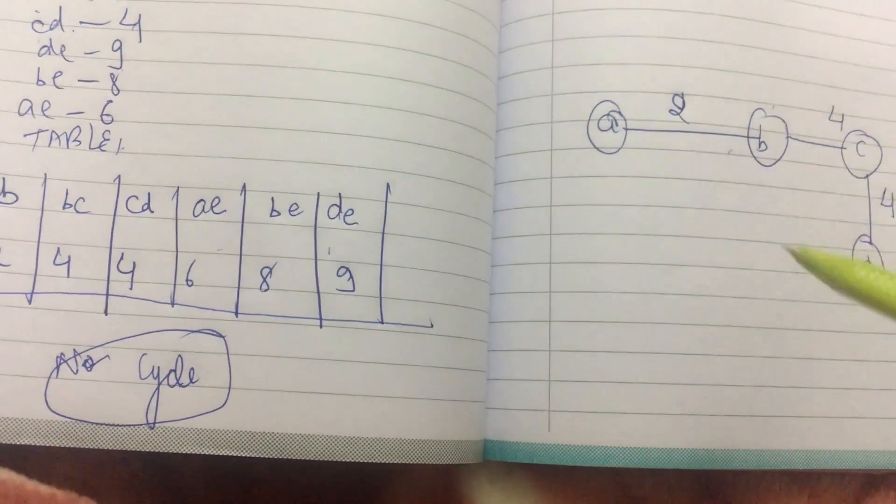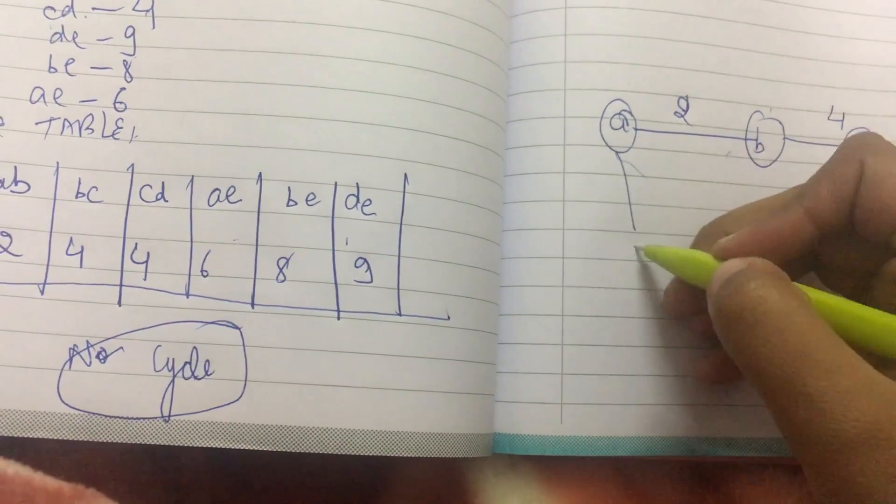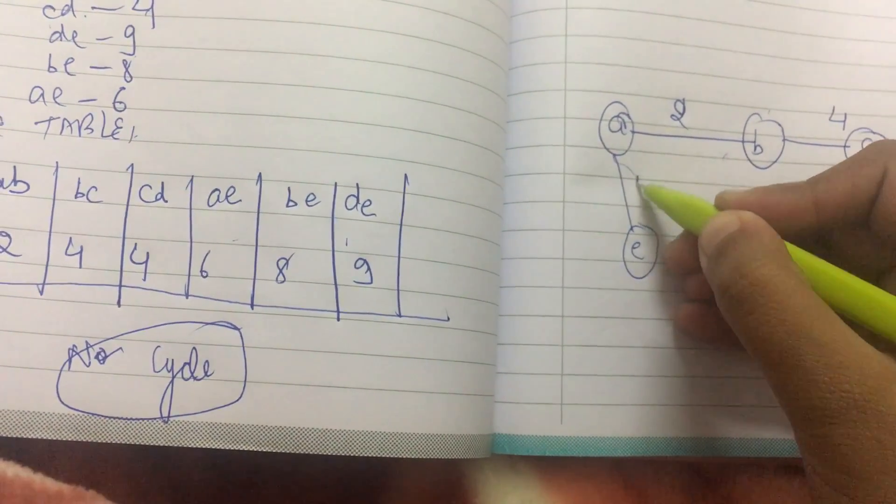Then A goes to E. E is not traversed earlier, so I can make A goes to E with a weight of 6.